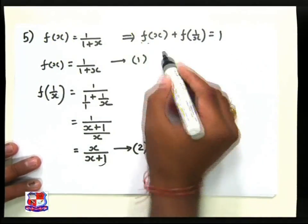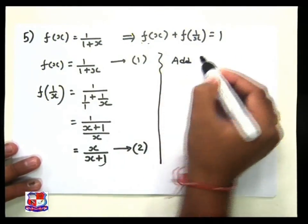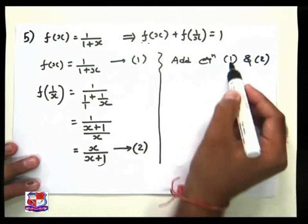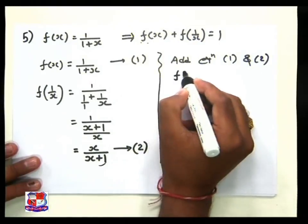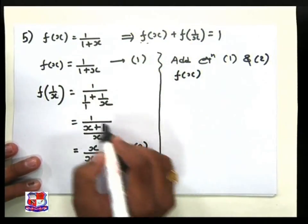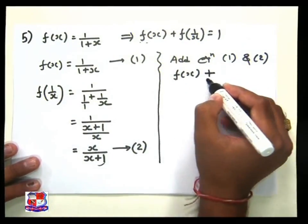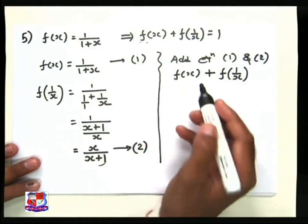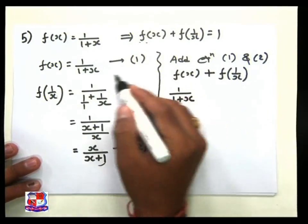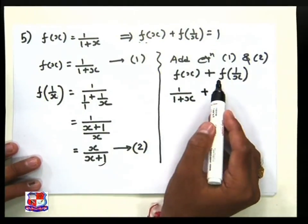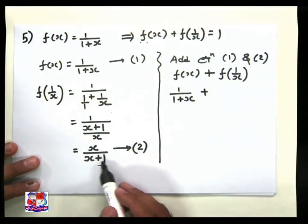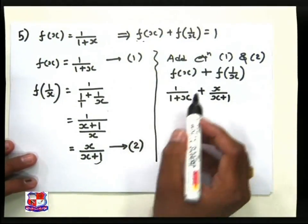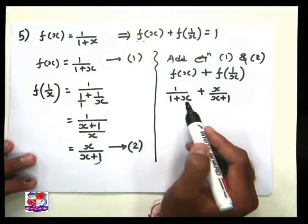Now add equation 1 and equation 2: f(x) + f(1/x) = 1/(1 + x) + x/(x + 1). Since (1 + x) and (x + 1) are the same, the LCM is (1 + x). So the sum = (1 + x)/(1 + x) = 1. Hence we have proved f(x) + f(1/x) = 1.